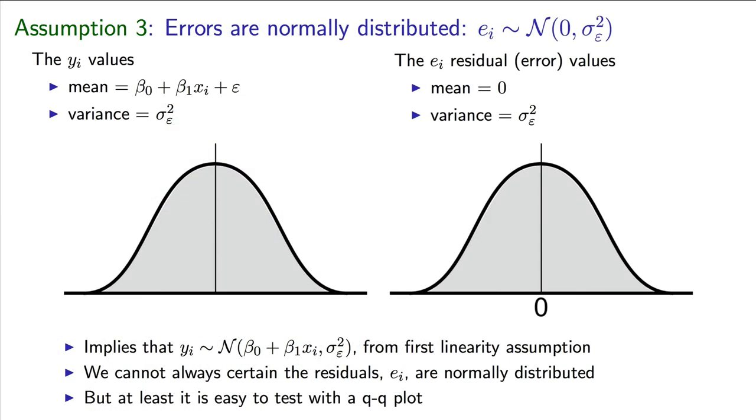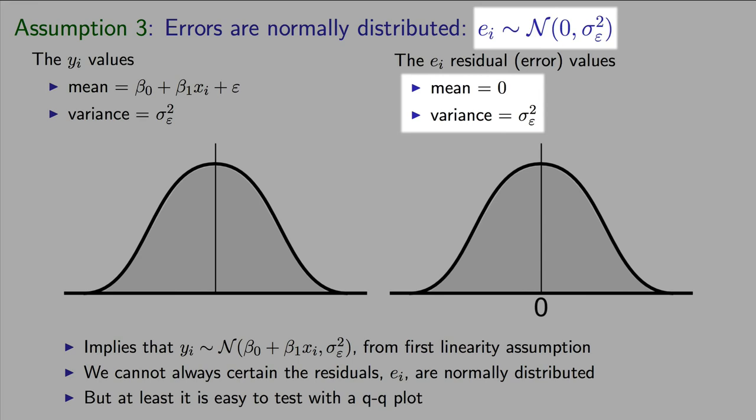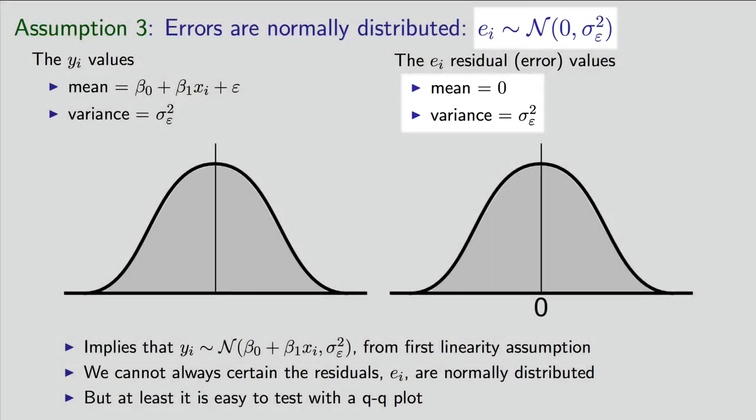The third assumption indicates that our errors are normally distributed. You've heard me make mention of this assumption earlier, when I tried to interpret the standard error for you. Now we're going to formally state this as a requirement that our errors must come from the normal distribution, with mean of zero and some variance sigma squared e. The implication of this is that if the assumption is true, then our y values come from a normal distribution, with mean of beta zero plus beta 1 times xi and the same variance. That distribution derives from the first assumption of linearity we saw earlier.